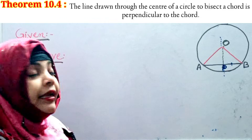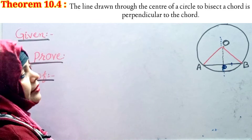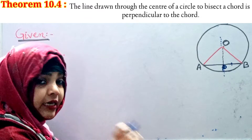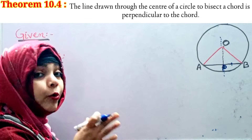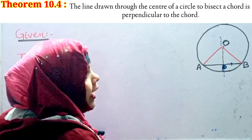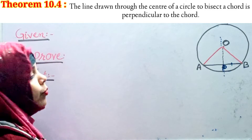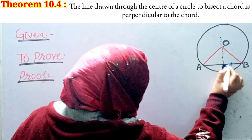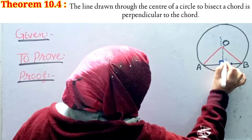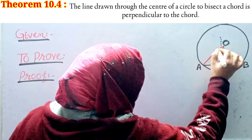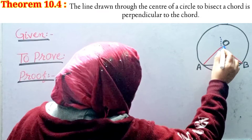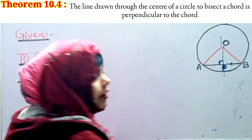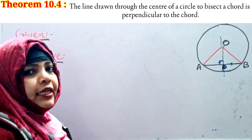But now we have to prove that a line from the center that bisects the chord is perpendicular to the chord. Perpendicular means we have to prove that angle OPA is equal to angle OPB, which means it is 90 degrees, because we call equal angles on a straight line perpendicular.